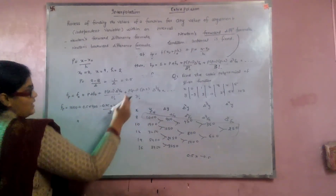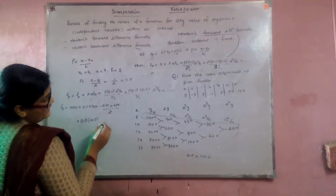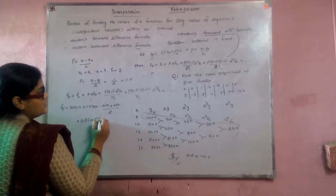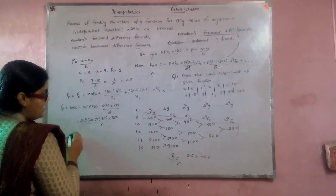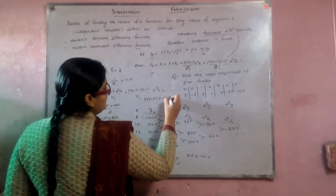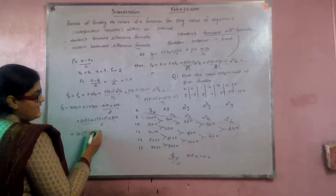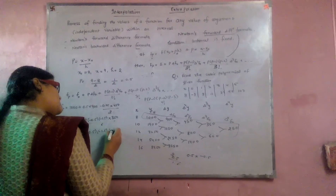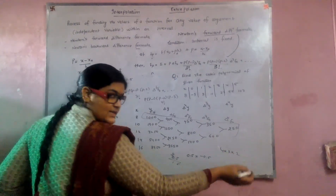Continuing: for the fourth-order term, p = 0.5, p−1 = −0.5, p−2 = −1.5, p−3 = −2.5, divided by 4! = 24. Substituting Δ⁴f naught and computing all terms together. On solving, we get the interpolated value at x = 9 approximately equal to 1405.85 (or as computed from the table values).